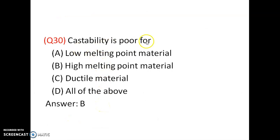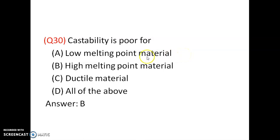Castability is poor for high melting point materials. It can be suitable for low melting point materials like aluminum, cast iron, and lead. It may not be suitable for high melting point materials. Option B is correct.